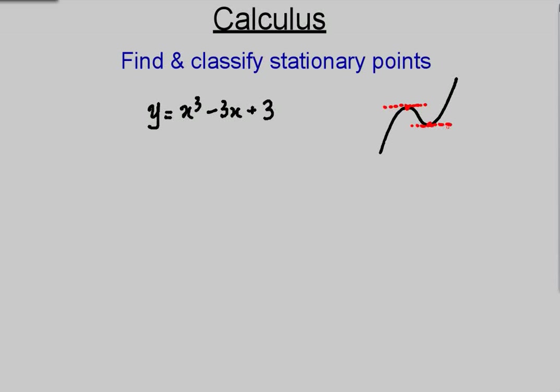We would expect to find possibly two stationary points on this cubic curve, and we're going to use calculus to find them, which means we need to differentiate. We need dy/dx. I'll assume you can differentiate curves like this: x³ becomes 3x², minus 3x becomes minus 3, and plus 3 disappears.